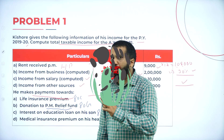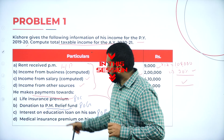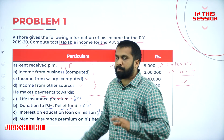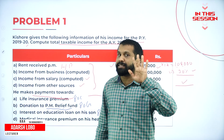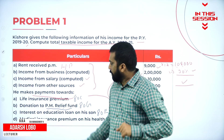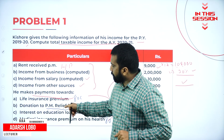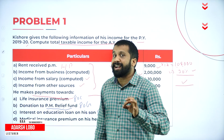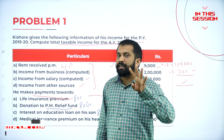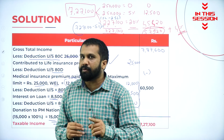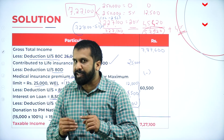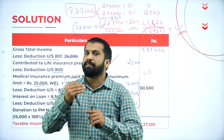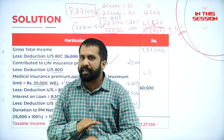If it is prime minister drought relief fund, it is applicable for 50% deduction. If it is not mentioned, it is applicable for 100%. Rebate only you will get if it is less than 5 lakh. If it is more than 5 lakh, the rebate option will not be applicable.